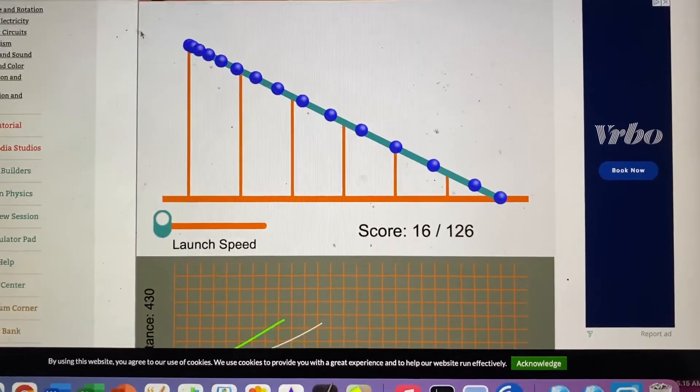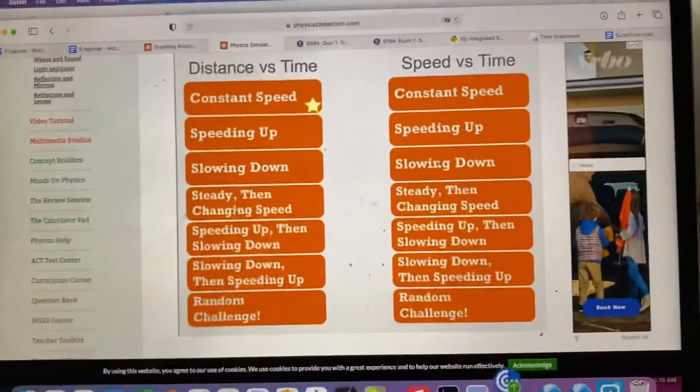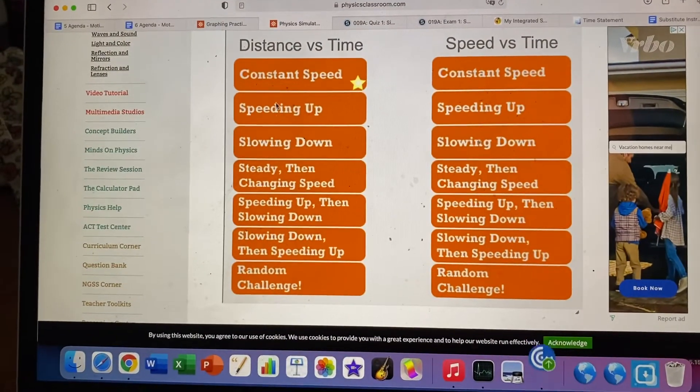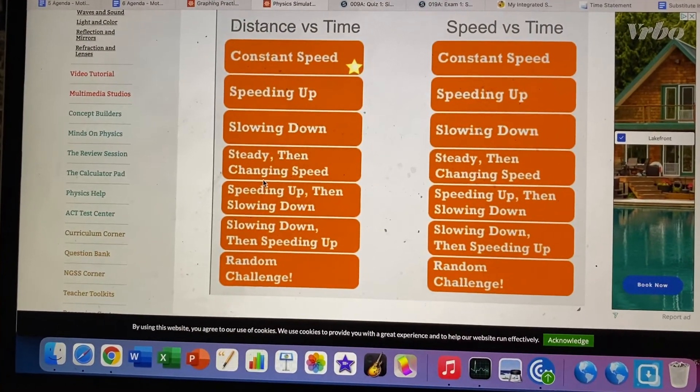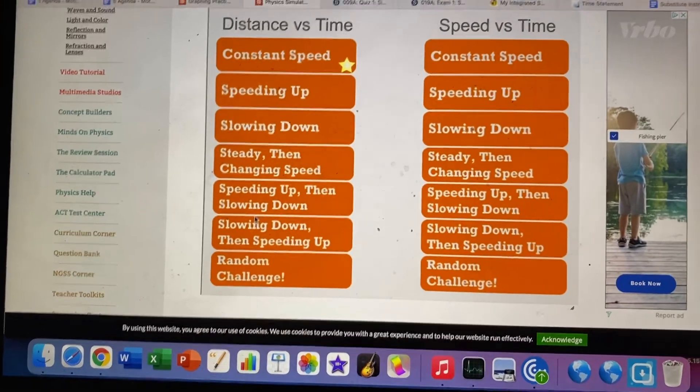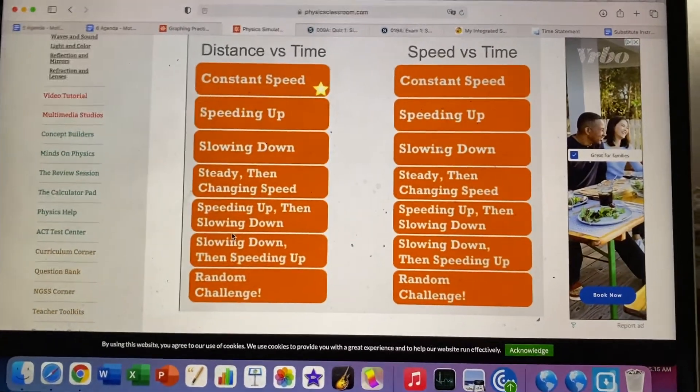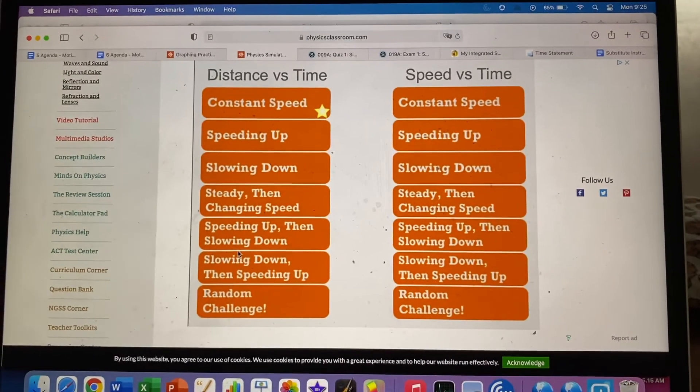So what I'd like you to do is I want you to get a star for each of these distance-time graph ones. All right, there are seven in total. Okay, try them out. Good luck. If you don't finish, it's homework for next class. All right, guys.